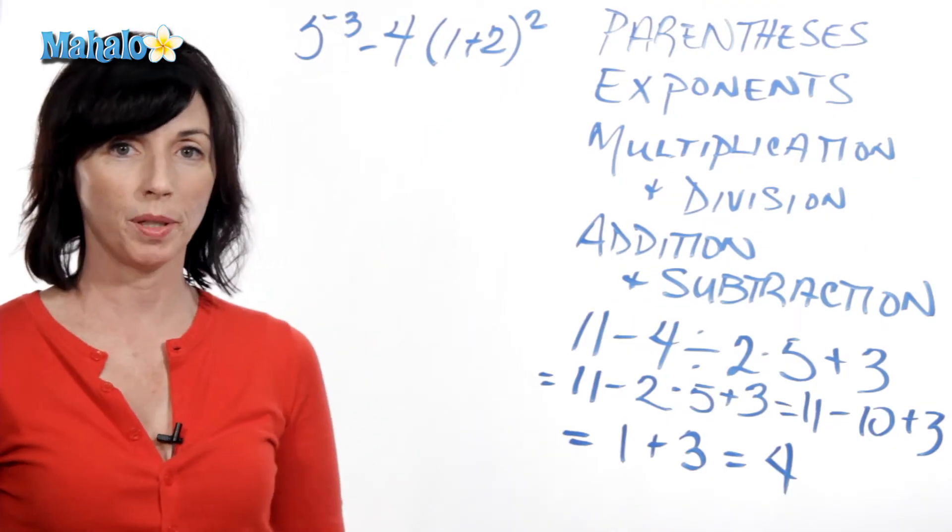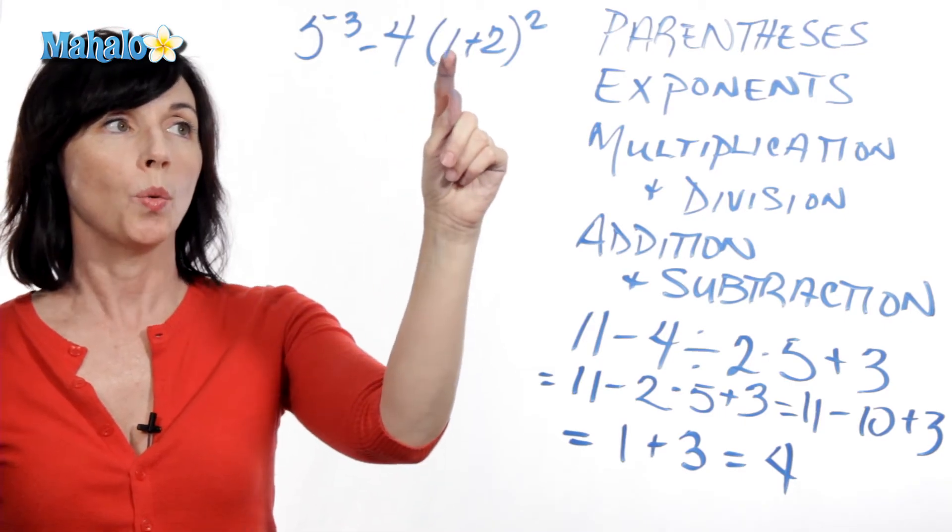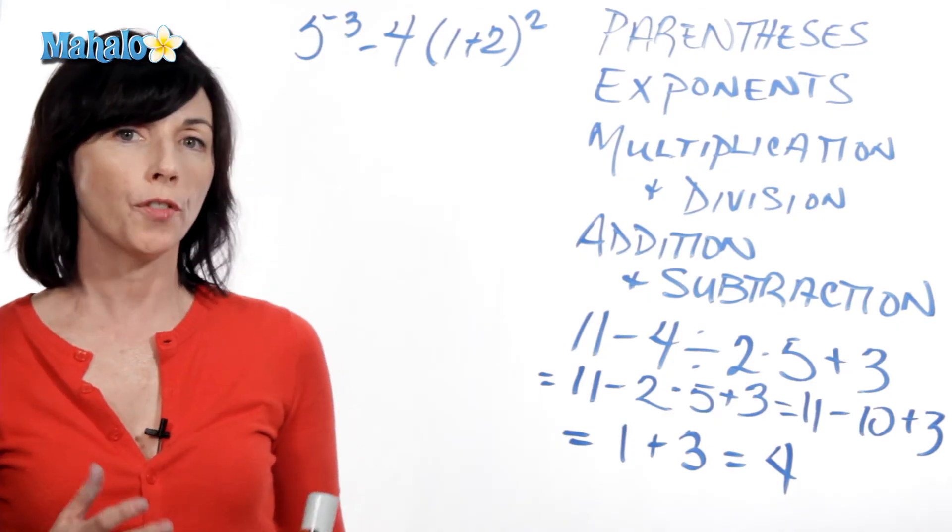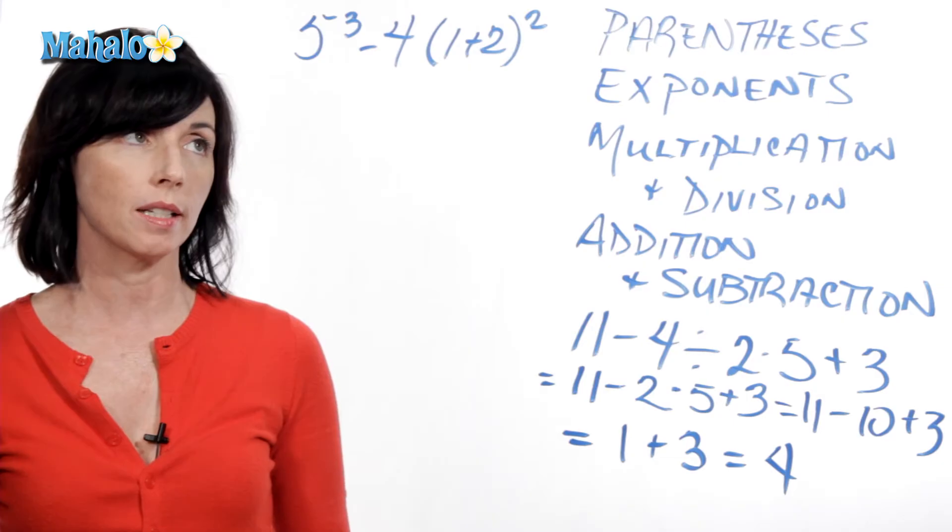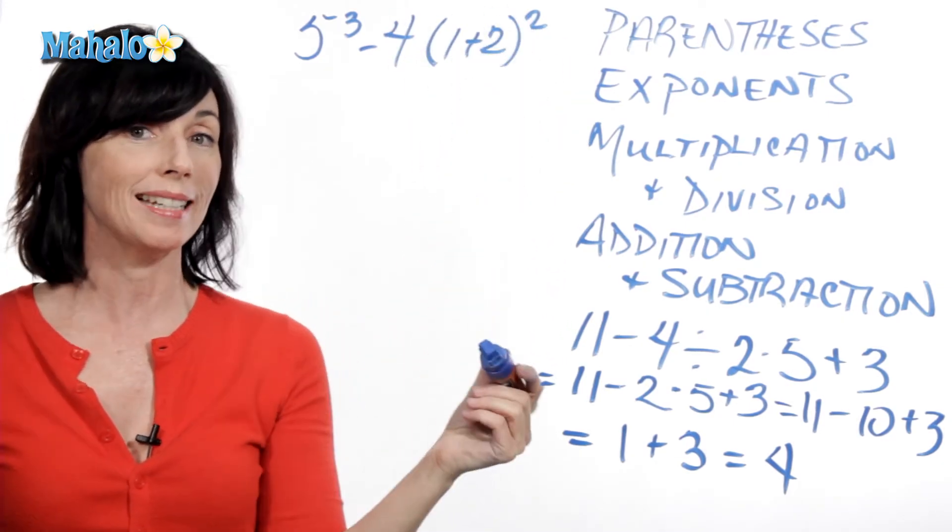So let's look at another example. Let's say we have 5 cubed minus 4 times 1 plus 2, and that whole thing is squared. So again, use order of operations. The first thing you want to do is simplify anything inside of the parentheses. Okay, so don't worry about what's outside the parentheses, just simplify what's inside of them.